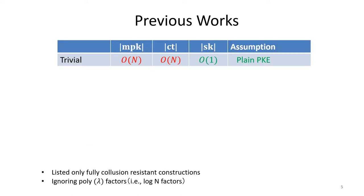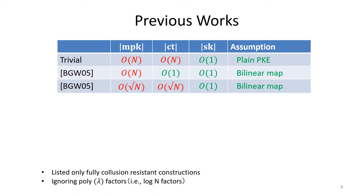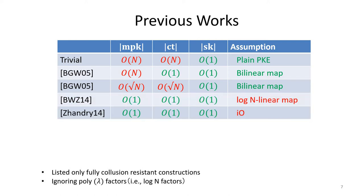Let us summarize the previous works on broadcast encryption, focusing on parameter sizes. The trivial construction requires master public key and ciphertext whose sizes are linear in the number of users. The first collusion-resistant broadcast encryption schemes with short ciphertext were proposed by Boneh, Gentry, and Waters. In their construction, the ciphertext and secret key are constant size. However, the drawback is that the master public key is linear in N. To mitigate this, they also proposed a construction with shorter master public key at the cost of longer ciphertext. The construction of a broadcast encryption scheme with all parameters constant had been an open problem for about 10 years.